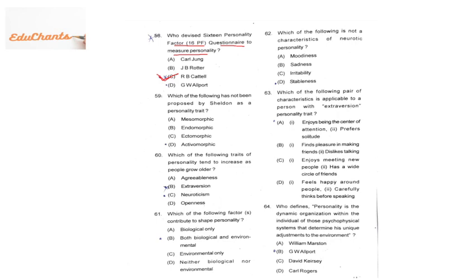Question 59: which of the following has NOT been proposed by Sheldon as a personality trait? Sheldon proposed three types of personality: endomorphic, ectomorphic, and mesomorphic. However, ectomorphic is listed as the answer that is NOT proposed — so the answer is D. Question 60 follows.